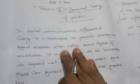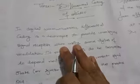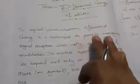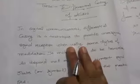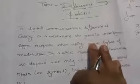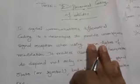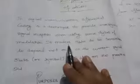Now, in digital communication, we have a differential coding technique. The purpose of this is to deal with unambiguous signals.